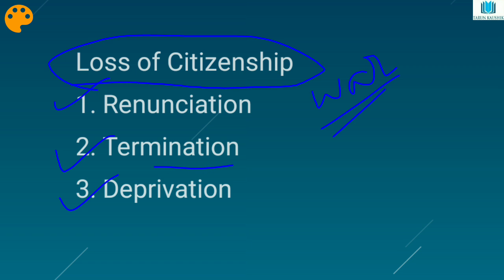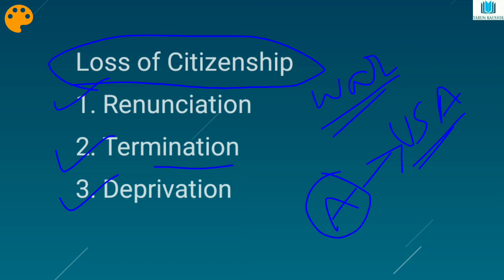The second is termination. A person can lose citizenship by way of termination automatically. For example, if a person — say X, Y, or Z — has taken the citizenship of the USA, then automatically his citizenship of India will be terminated.